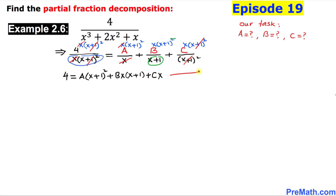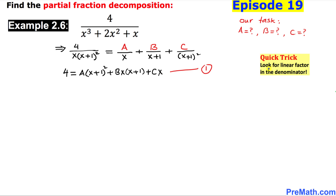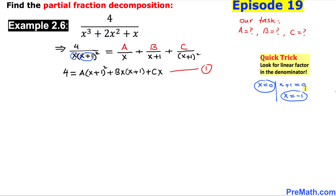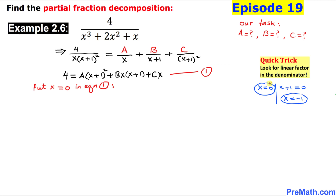Here is our quick trick: look for linear factors in the denominator. We have x and x+1 as linear factors. Setting x = 0 gives one x-value, and setting x+1 = 0 gives x = -1 as another x-value.